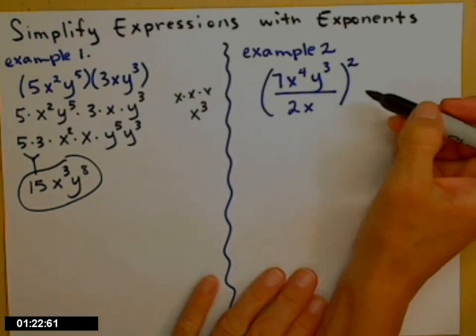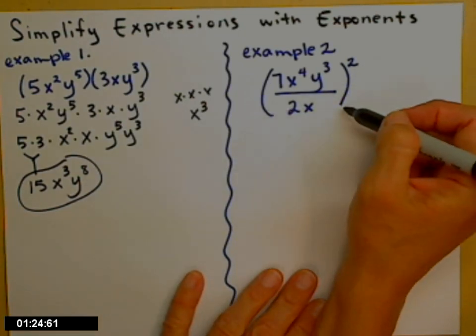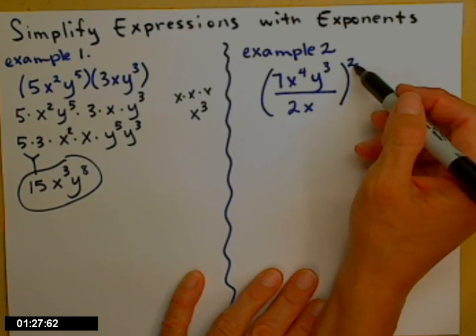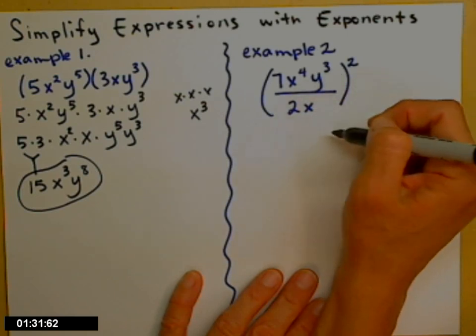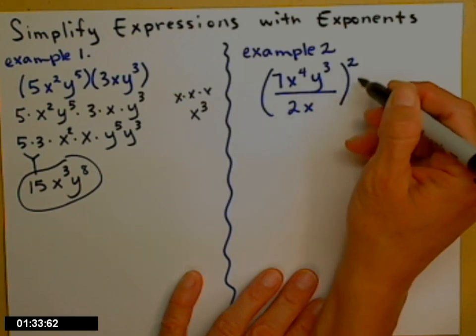This next one, let's take a look. I have a fraction. It's in parentheses. And I have this squared out here attached to everybody inside. I need to square everything. So we're going to use a couple of exponent properties here to tidy this one up.